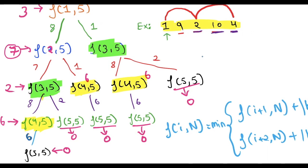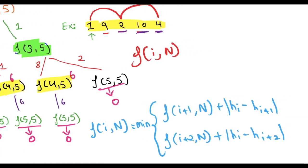Let's analyze how much memory we need. Every function can be written as f(i, n) where n is always constant and i varies from 1 to n. So we need to store only n distinct function values, meaning we need only O(n) memory. Let's now write the C++ code for this problem.